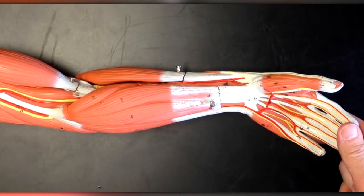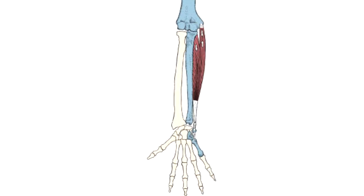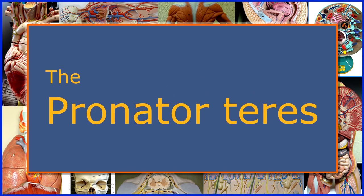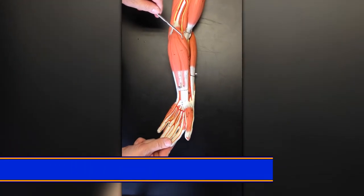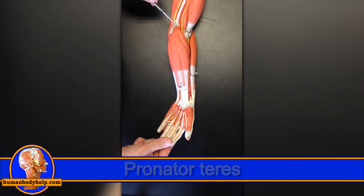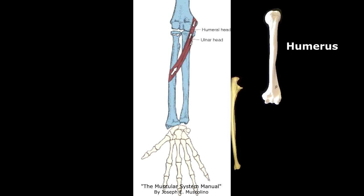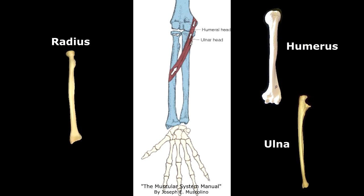Now that you know what the muscles are, let's look at the details of each muscle. The first of the anterior forearm muscles we'll look at is the pronator teres. This two-headed muscle attaches to the humerus, the ulna, and the radius.